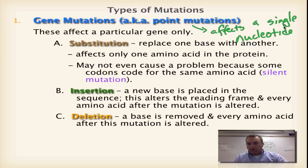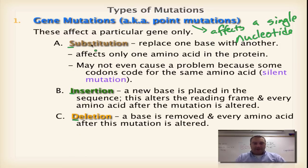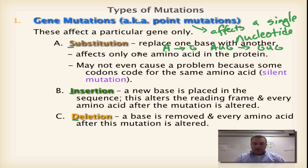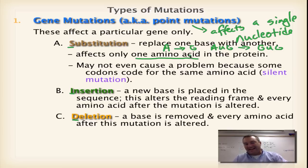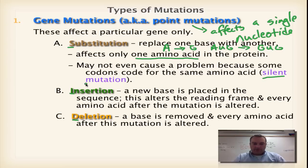Gene mutations or point mutations come in three flavors: substitution, insertion, and deletion — S, I, D. In a substitution, you substitute one base for another. So if you originally had an A, you've substituted a G for it — if it read A, U, G, it will now read G, U, G. What's really important about a substitution is that it affects only one amino acid. The average protein has 300 amino acids, so 299 will be in the correct place, but one amino acid was changed. Sometimes a substitution leads to what is called a silent mutation.